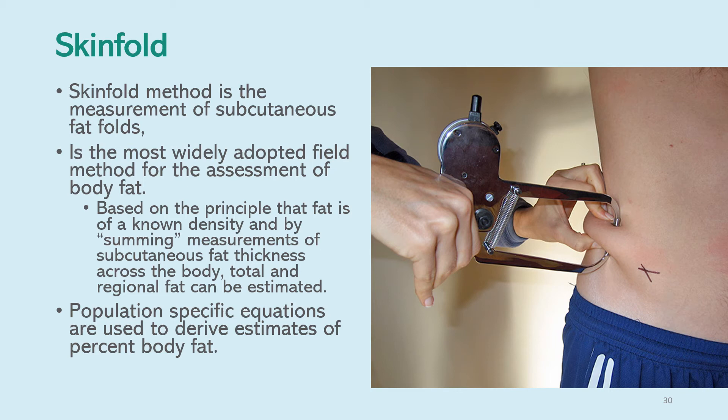The first method is skinfold. The skinfold method is the measurement of subcutaneous fat folds and is the most widely adopted field method for assessing body fat. It is based on the principle that fat is of a known density, and by summing measurements of subcutaneous fat thickness across the body, total and regional fat can be estimated. There are population-specific equations used to derive estimates of a person's body fat.